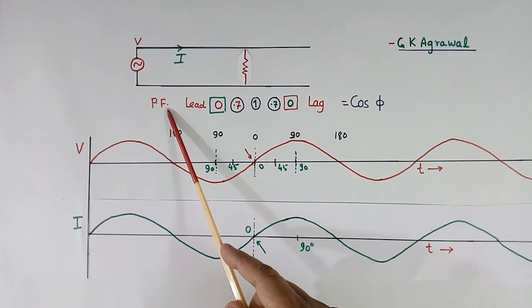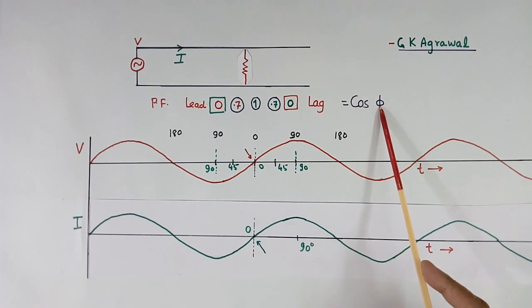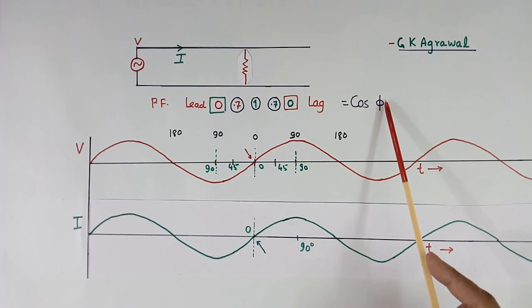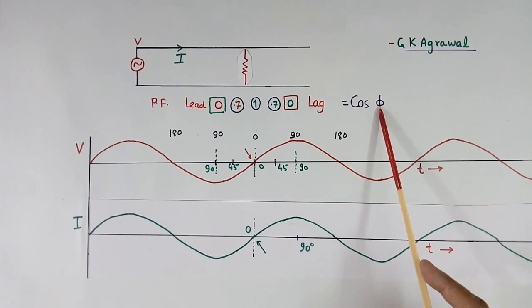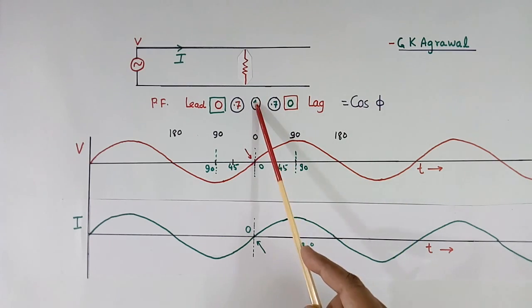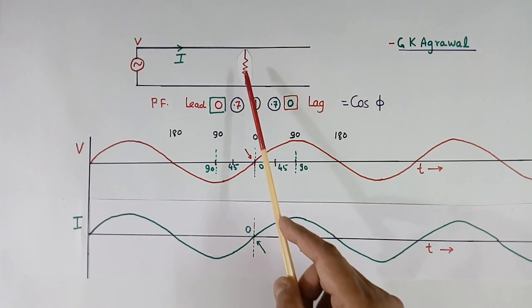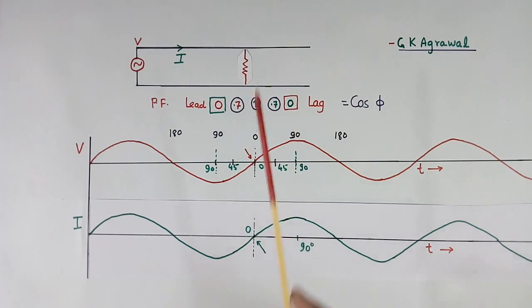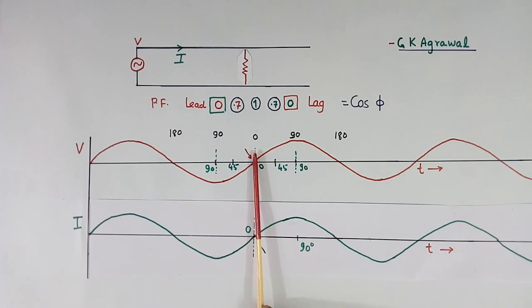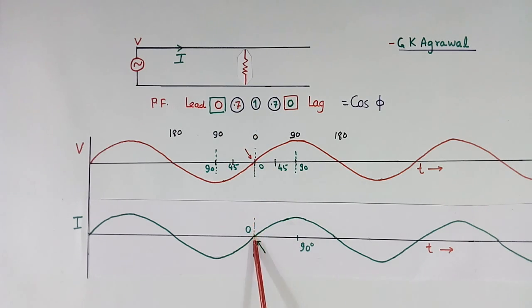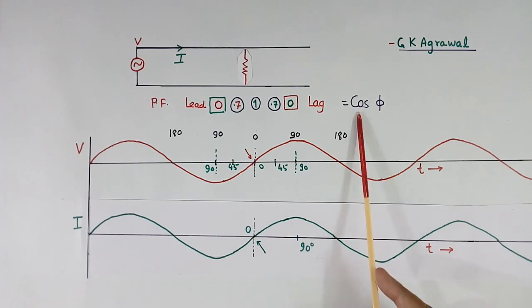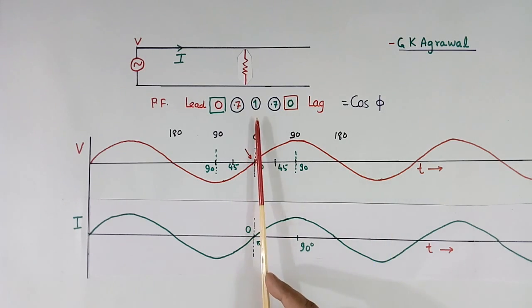Power factor is equal to cos phi. If phi is zero, cos zero will be equal to 1. So in case of resistive load, power factor is 1, because the angle between the voltage zero crossing and the current zero crossing is 0, and cos zero is 1.